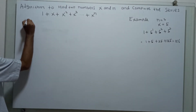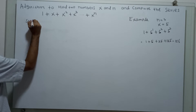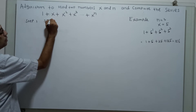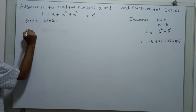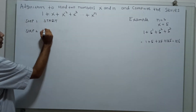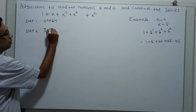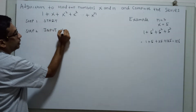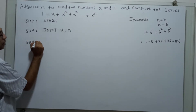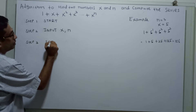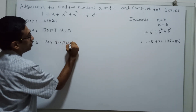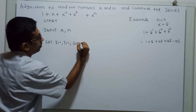We will write the algorithm. Step 1: Start. Step 2: Read the value of x and n from the user — input x, n. Step 3: Set the values i equal to 1, t equal to 1, and sum equal to 1.